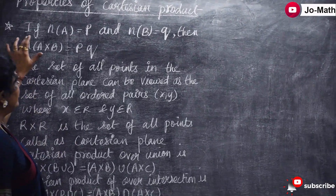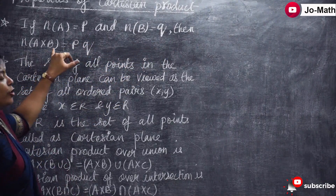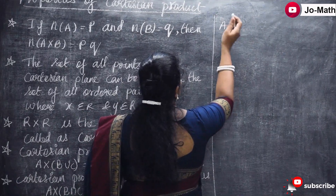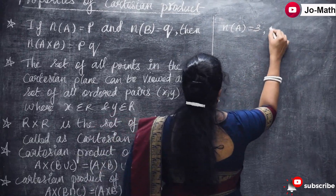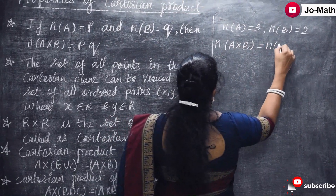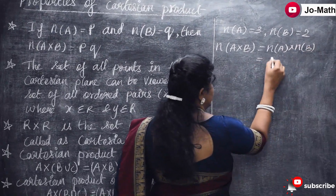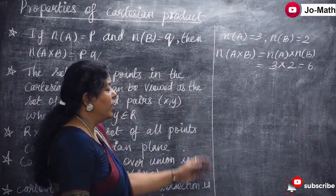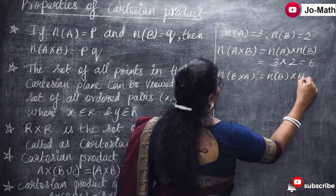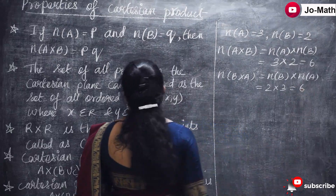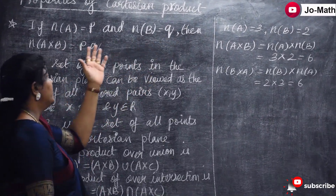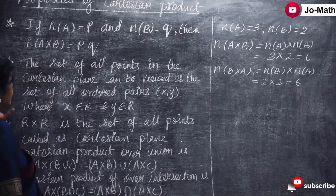See the next property: if n(A) is equal to p and n(B) is equal to q, then n(A cross B) is equal to p times q. For example, if A has 3 elements and B has 2 elements, then n(A cross B) equals 3 into 2, which is 6 ordered pairs. And B cross A also gives n(B) into n(A) = 2 into 3 = 6.